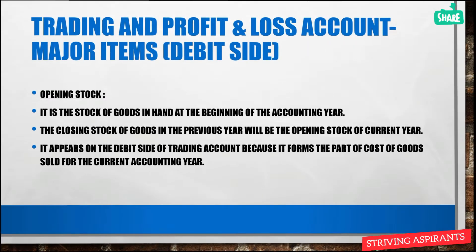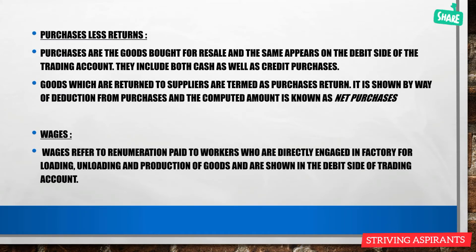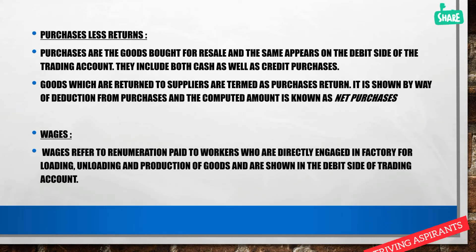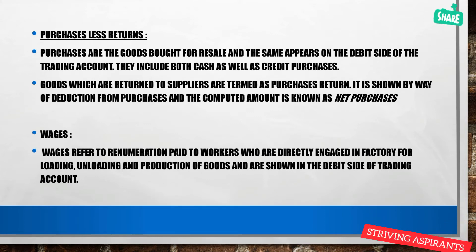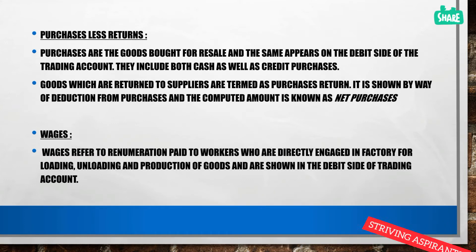Next is purchases less purchase returns. Purchases are the goods or items a company buys for resale, and they appear on the debit side of the trading account. Purchases include both cash and credit purchases. Purchase returns are goods returned to suppliers; the purchase return amount is deducted from the purchases amount, and the resulting figure is called net purchases.